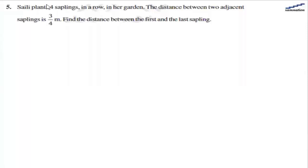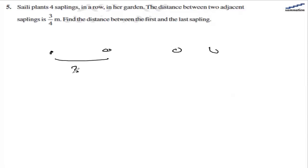Seili plants 4 saplings in a row in her garden — 1, 2, 3, 4 — and the distance between two adjacent saplings is 3/4 meter.